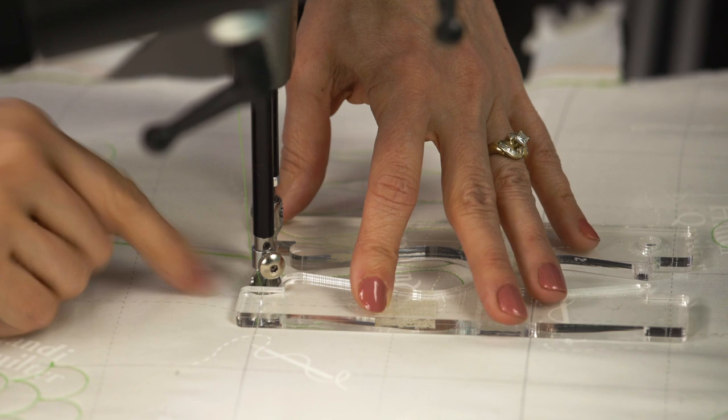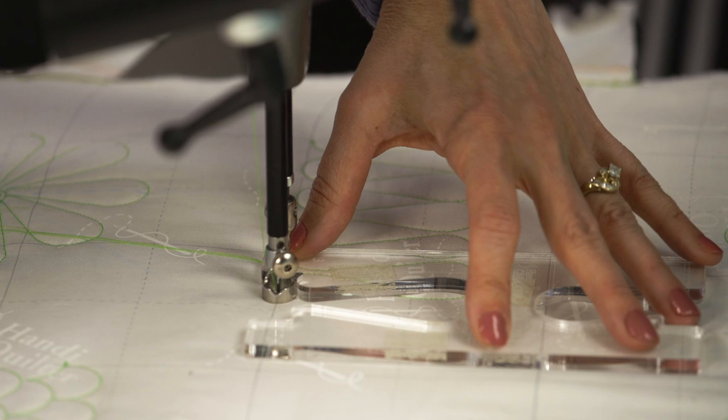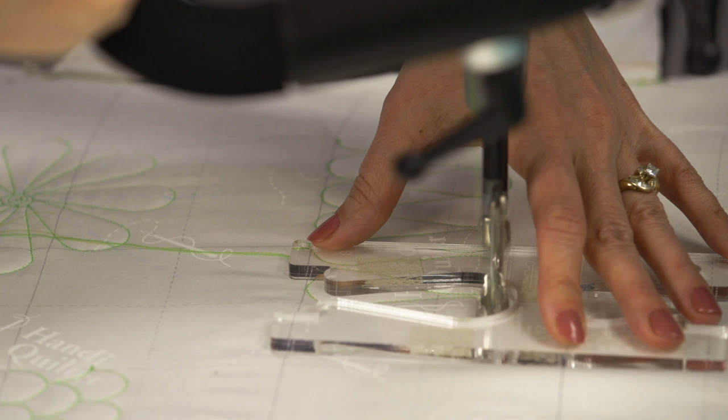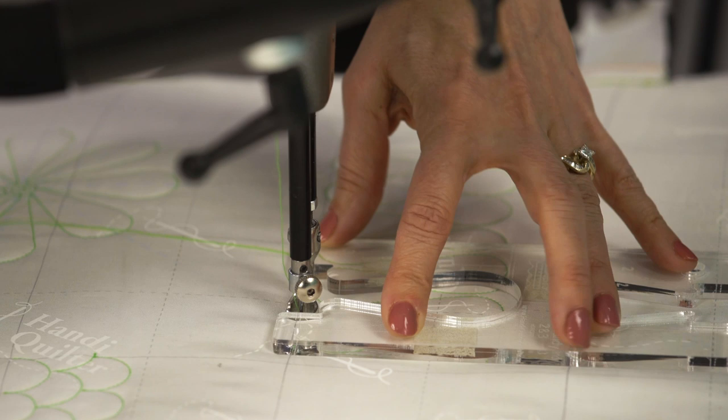Bumping right into that edge and then we're going to shift over and repeat the same thing, lining it up. And that's how you stitch your Ribbon Candy.